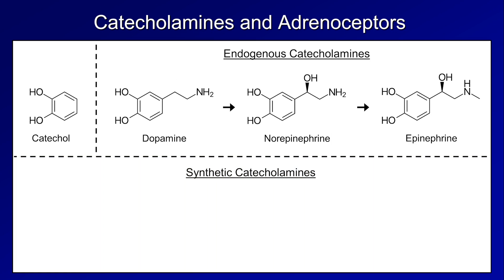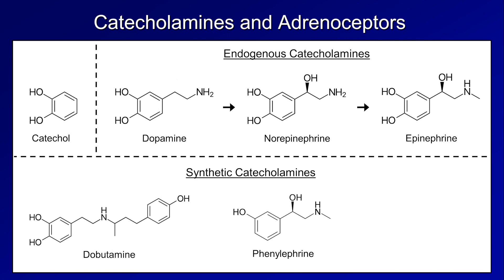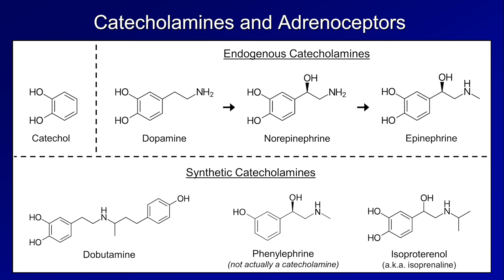There are also synthetic catecholamines used as medications to alter hemodynamics. They include dobutamine, phenylephrine — which, strictly speaking, is not actually a catecholamine — and isoproterenol, known in some parts of the world as isoprenaline. The first five of these drugs play an important role in the management of shock. Isoproterenol is rarely used as a second or third-line agent for symptomatic bradycardia, is poorly tolerated, and won't be discussed further.